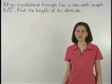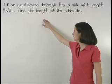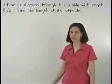If an equilateral triangle has a side with length 8 root 21, find the length of its altitude.